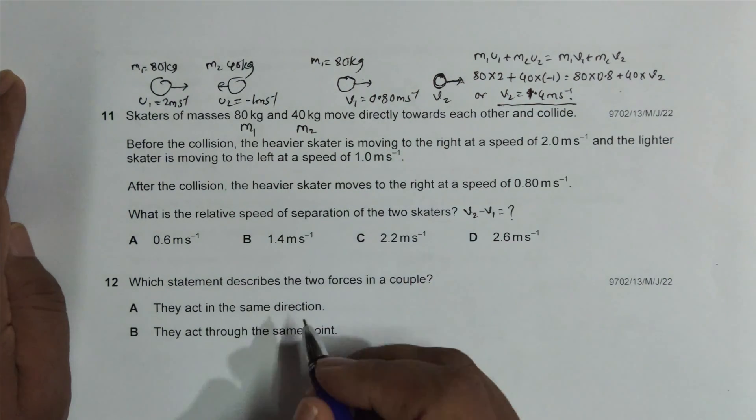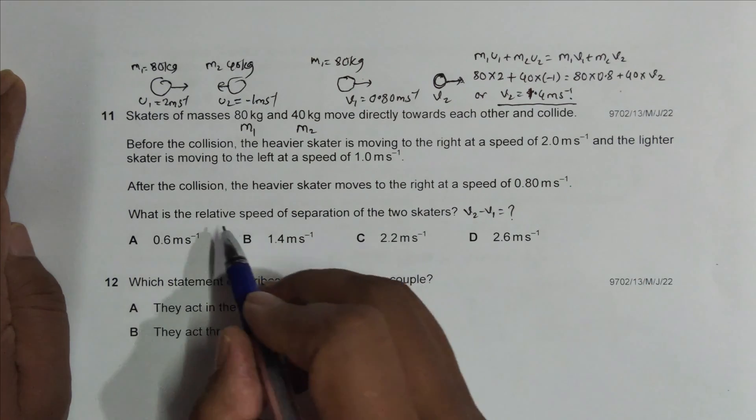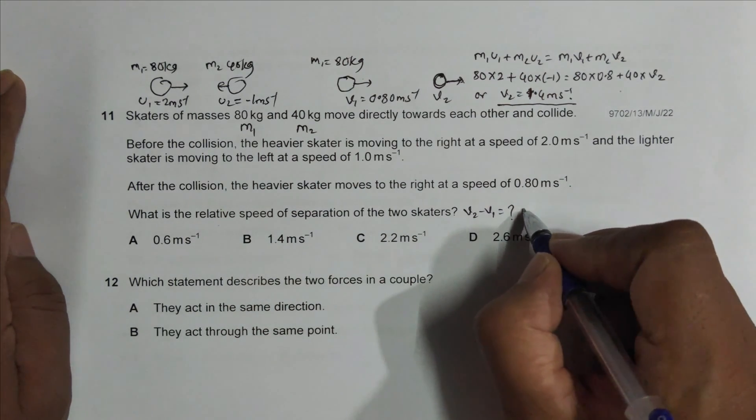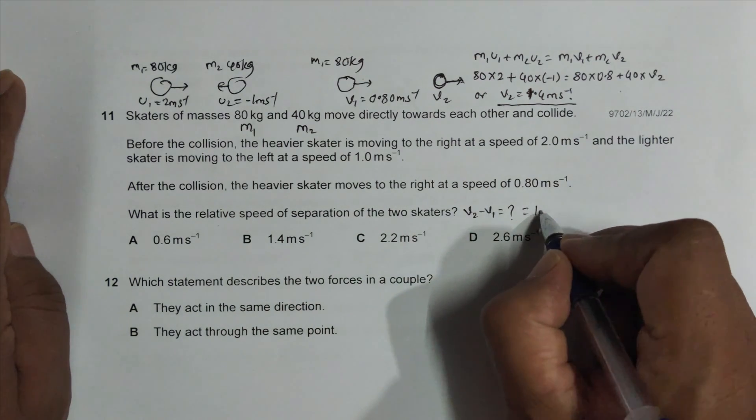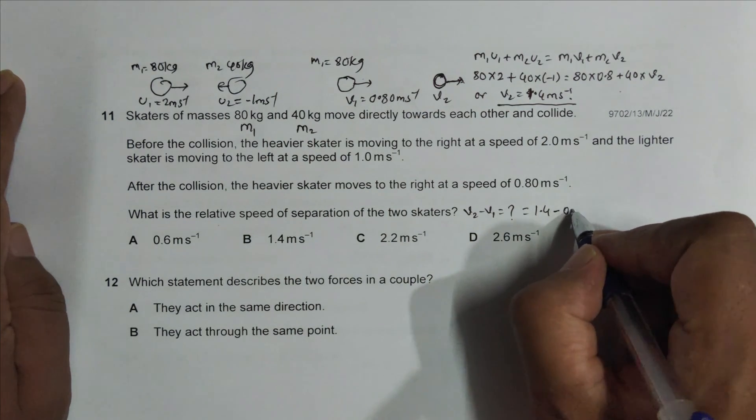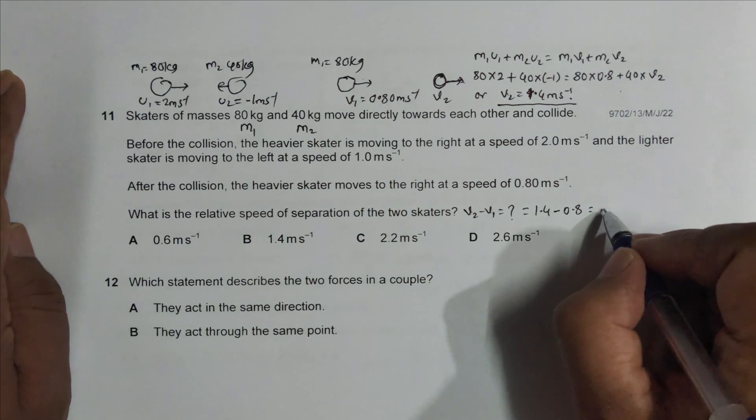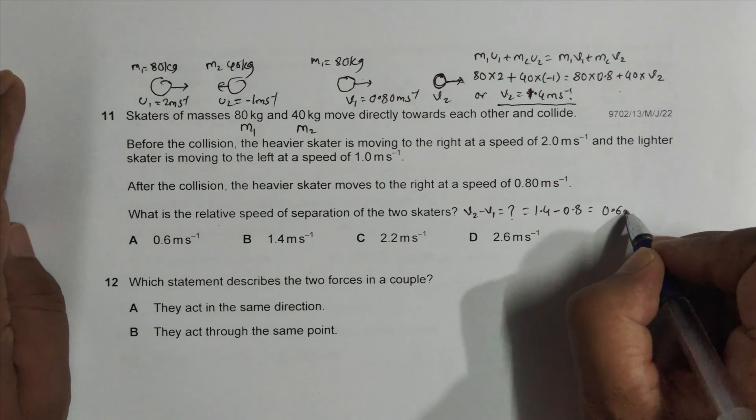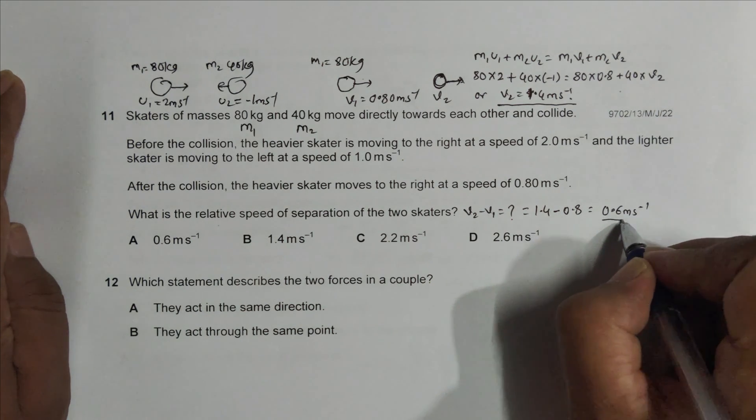So now the relative velocity of separation will be equal to v2 is 1.4 minus v1 is 0.8, will be equal to this is 0.6 meter per second. So the separation velocity is this much,